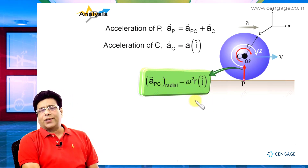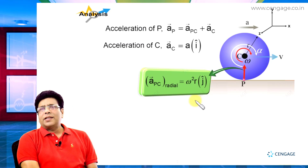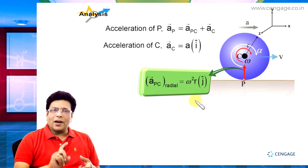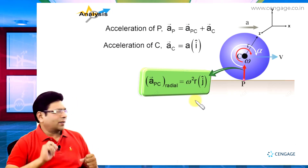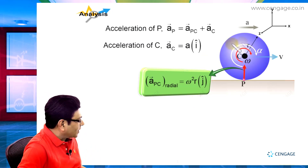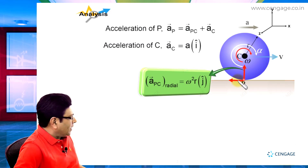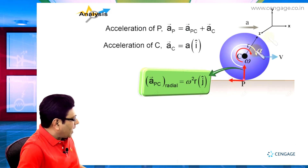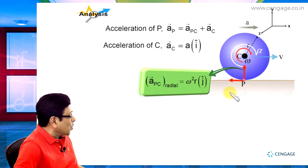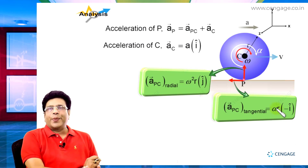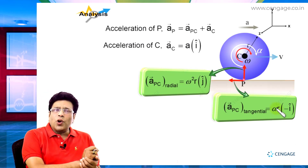Now for the tangential acceleration: we know its magnitude is alpha times r, where alpha is the angular acceleration and r is the radius. Since the disk rotates clockwise, the direction of the tangential acceleration at point P is opposite to the positive x direction. So the unit vector for this component is minus î, giving a tangential acceleration of minus alpha r î.